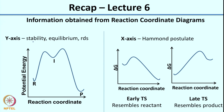One thing you get is stability. If you look at the energy of R and the energy of P, since the energy of P is lower than the energy of R, we can say that P is more stable than R. The other thing you can say is whether there is a possibility of equilibrium. And the third thing is which would be the rate determining step - whichever has a higher activation energy. In this case it would be the second step, based on the larger barrier going from intermediate I to product P.